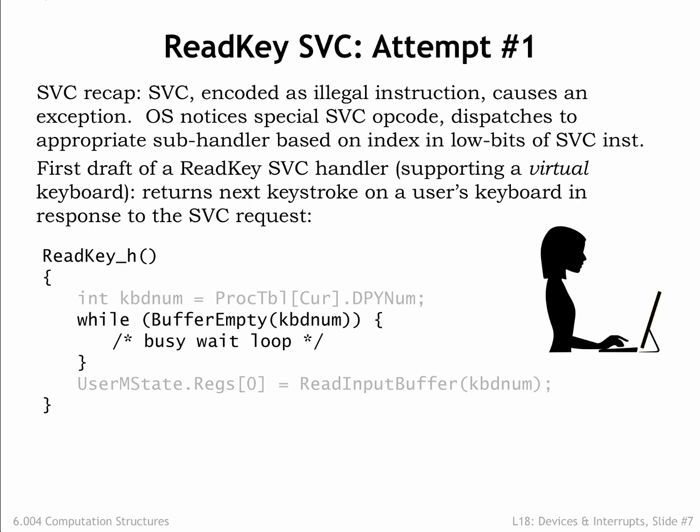Now let's figure out what to do when the keyboard buffer is empty. The code shown here simply loops until the buffer is no longer empty. The theory is that eventually the user will type a character, causing an interrupt, which will run the keyboard interrupt handler discussed in the previous section, which will store a new character into the buffer. This all sounds good until we remember that the SVC handler is running with the supervisor bit, PC31, set to 1, disabling interrupts.